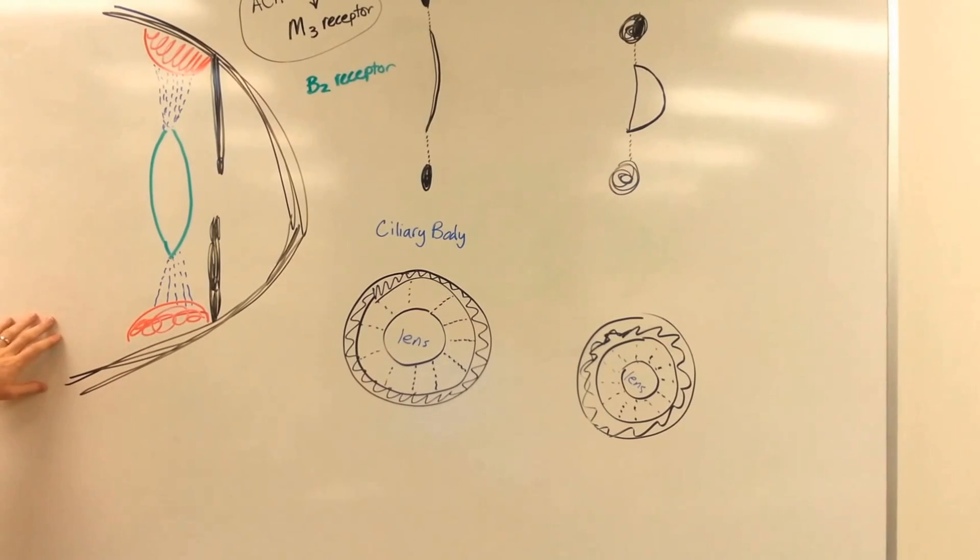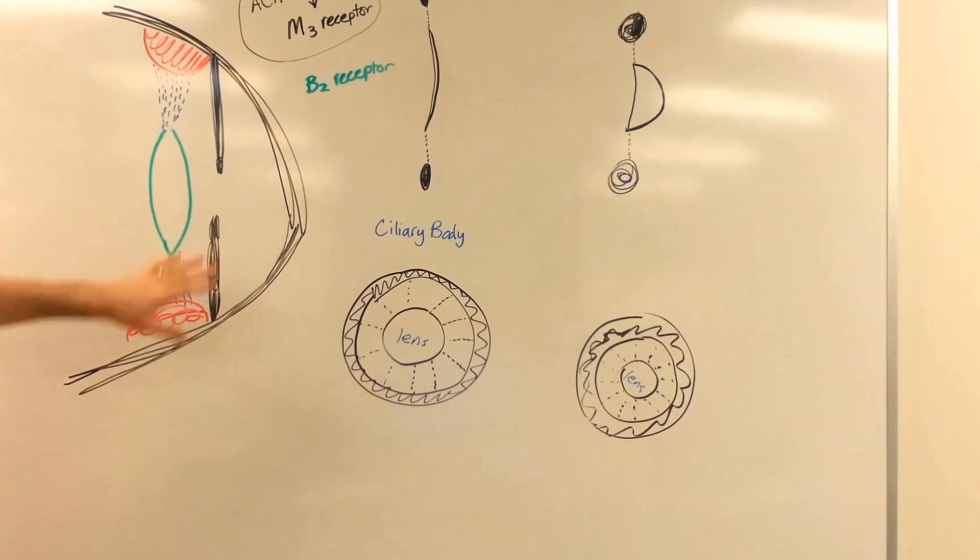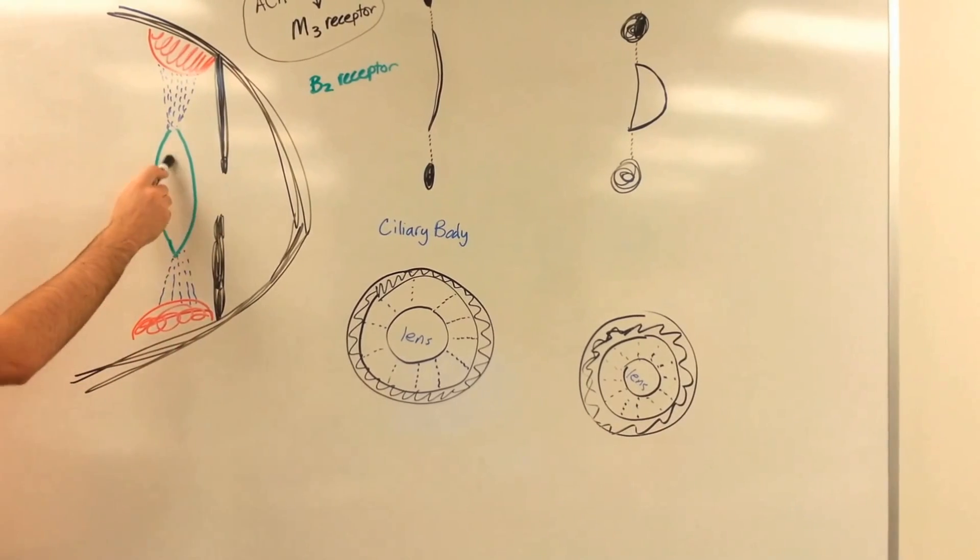So to begin, I'm just going to go over the basic anatomy. We have the lens here. So this is going to be the eye. We've got the pupil. We've got a lens.